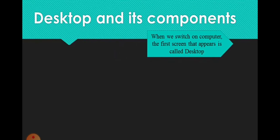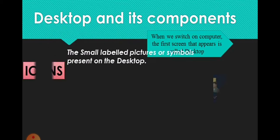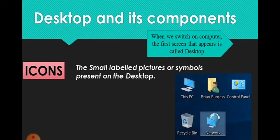When we switch on a computer, the first screen that appears is called the desktop. The desktop and its components: when we switch on the computer, the first screen that appears is called the desktop. There are many icons present on the desktop. Icons are the small labeled pictures or symbols present on the desktop.